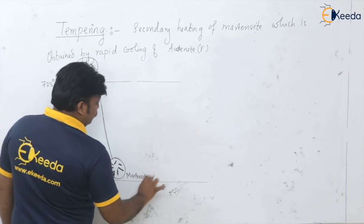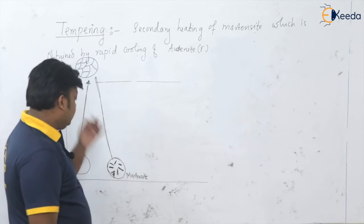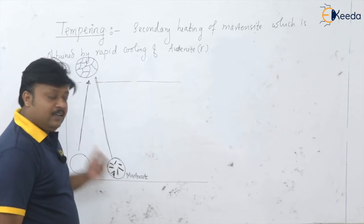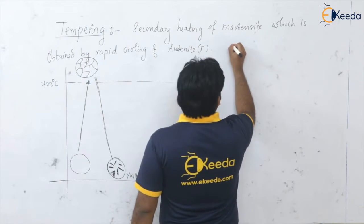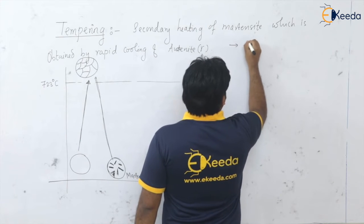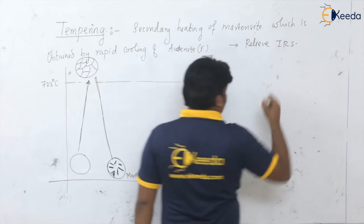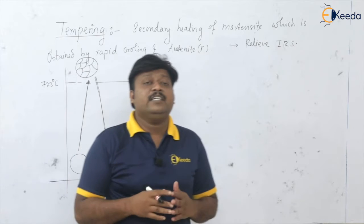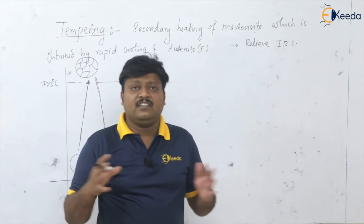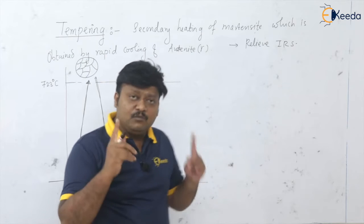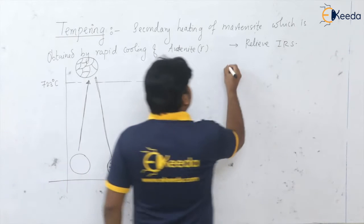Martensite is very hard and brittle — it cannot be directly used for applications. So we need to again enhance some properties. Very importantly, the first property we want to address is the internal residual stresses and strains caused by the hardening process. We want to remove these internal residual stresses from the martensite.